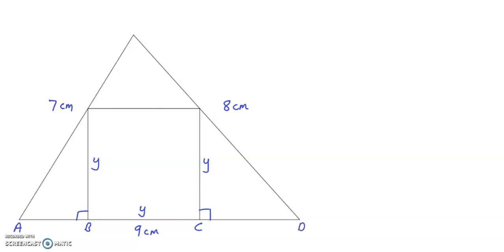Looking at the base length AD, we can see that AD equals AB plus BC plus CD. We know that AD is 9 cm, and we know that BC is y. So what we need to do now is to find AB and CD both in terms of y.